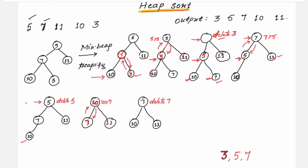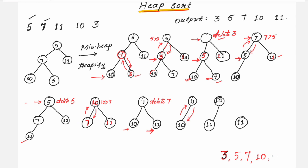After deleting 7, the position is vacant. We have nodes 10 and 11; always select the rightmost leaf node. Check whether the parent node has a lesser value than the child — it does not, so swap. The root node is now 10, which gets deleted and placed in the sorted list. The only element remaining in the tree is 11, which also gets added. The sorted output is: 3, 5, 7, 10, 11.